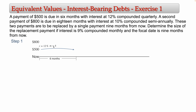In six months there are two quarters — each quarter is three months — so n equals 2. We can now use the future value formula: 500 × (1 + 0.12/4)^2. Computing this in a calculator: 500 × (1 + 0.12/4)^2 gives $530.45. This is the amount you are scheduled to pay six months from now.